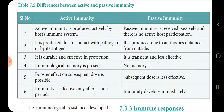Active immunity is produced due to contact with a pathogen or antigen, while passive immunity is due to antibodies obtained from outside. Active immunity is durable and effective. Passive immunity is less effective, with no immunological memory. Active immunity is effective only after a short period, whereas passive immunity develops immediately.